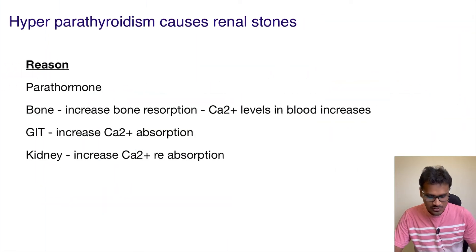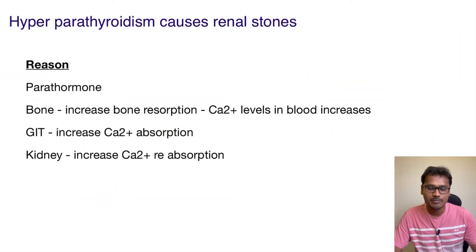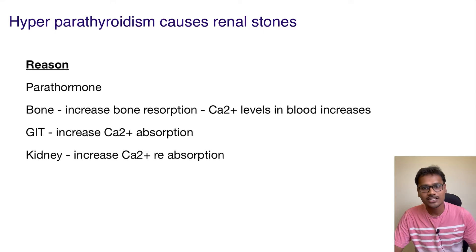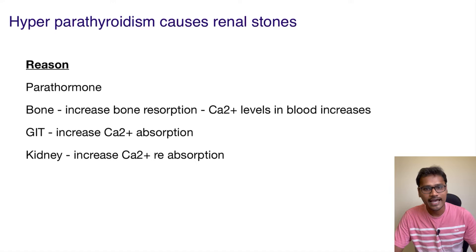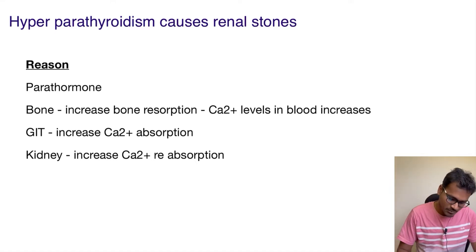So what happens in hyperparathyroid patients? First, let's understand what parathormone is, which is secreted by the parathyroid gland. Normally, parathormone acts in three places: the bone, the gut, and the kidneys.